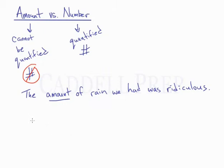But we can count the number of inches of rain. So we could write: The number of inches of rain we had was ridiculous.